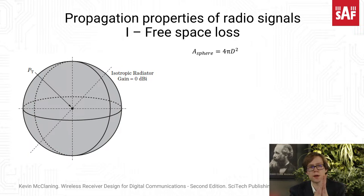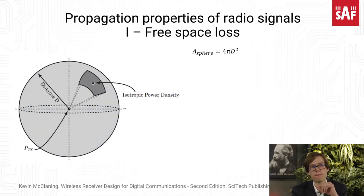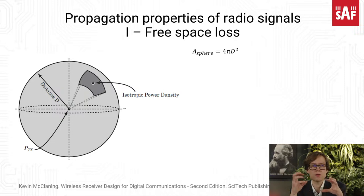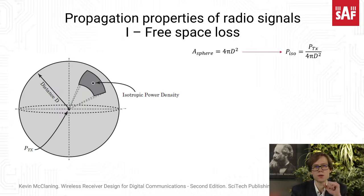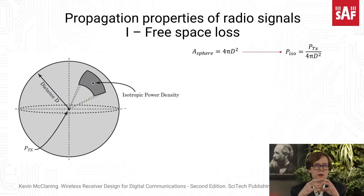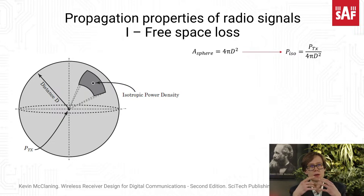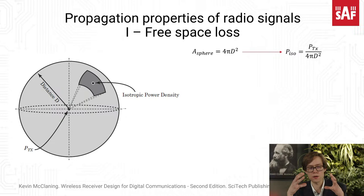We will need to use the area of the sphere, which is equal to 4π times d squared. The isotropic power density at any given point around this isotropic radiator — the power per unit area — will be equal to the total power which the isotropic radiator emits, divided by the area of the sphere we are looking at. So this is the isotropic power density: total radiated power divided by the overall area of the sphere.